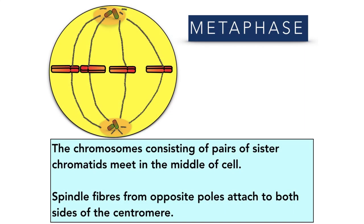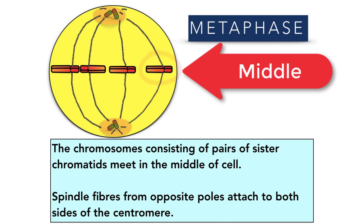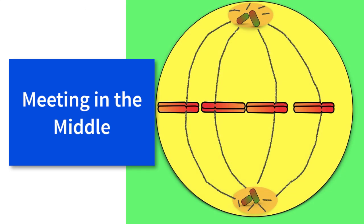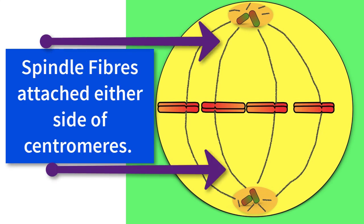Next we have metaphase. Think of M for metaphase and M for middle, because these chromosomes — which consist of pairs of sister chromatids — are lined up along the middle of the cell. There are spindle fibers coming down from each pole, attached to both sides of each chromosome at the centromere. Metaphase is easy to identify because the chromosomes line up across the middle of the cell with spindle fibers attached to either side of the centromeres.